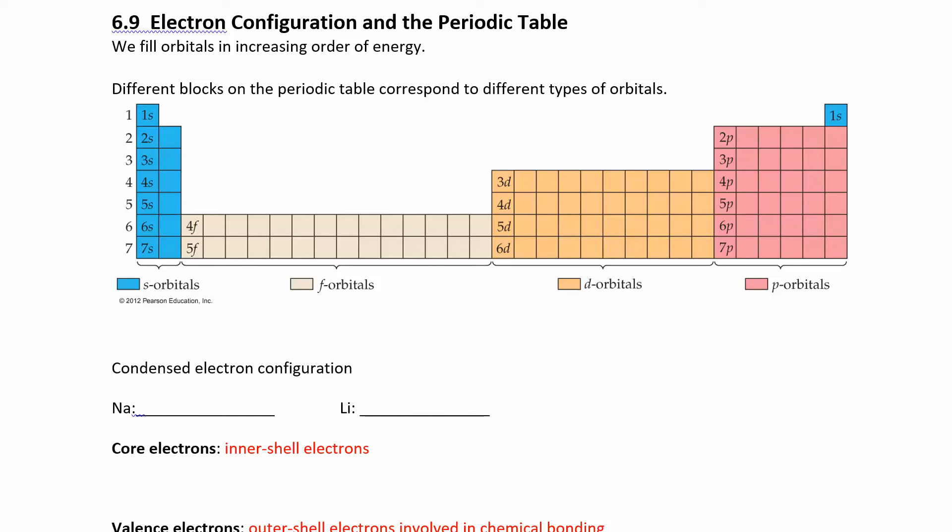Another way to determine the electron configuration is to use the periodic table instead of the energy diagram. If you break up the periodic table into these four different blocks, remember s orbitals have two electrons in them and the p electrons you can have 6, d you can have 10, and f you can have 14.